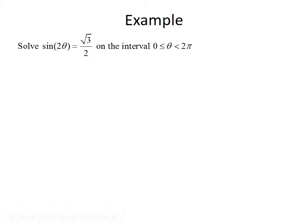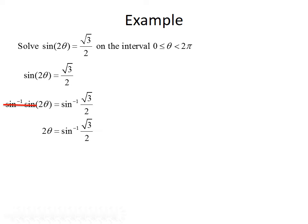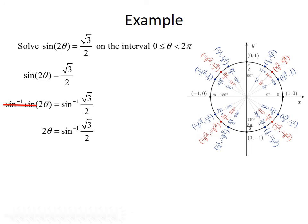Let's look at another example. This time we want to solve sine of 2θ equals root 3 over 2 on the interval from 0 to 2π. Since the sine is already isolated, we take the inverse sine of both sides. The inverse sine cancels the sine, giving us 2θ equals the inverse sine of root 3 over 2. Root 3 over 2 is a common value on our unit circle, so we can use it to evaluate this inverse sine.